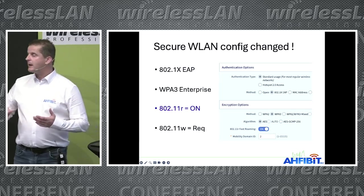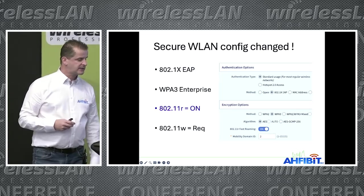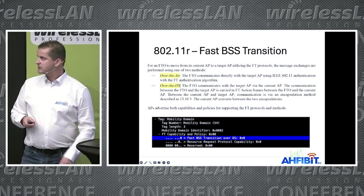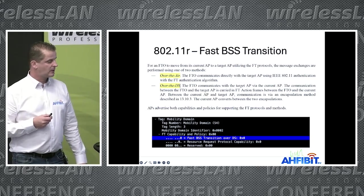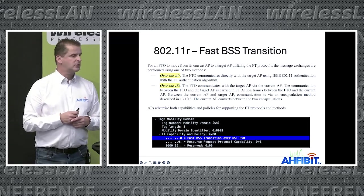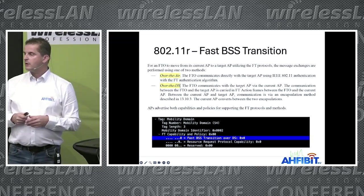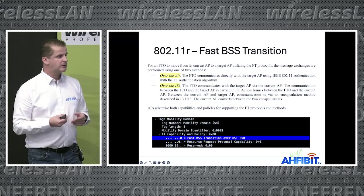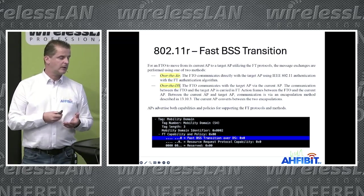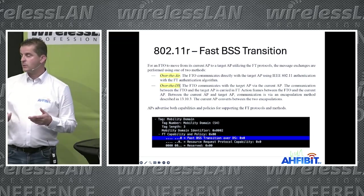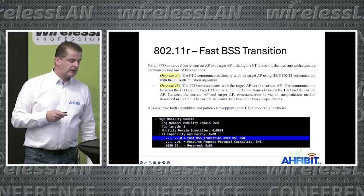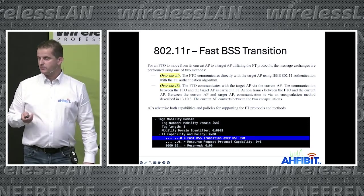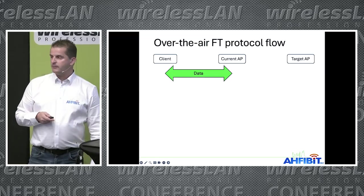I was hoping 11r would get me to five or ten milliseconds. Looking at the 802.11-2020 standard, there are two options: 11r over-the-air and 11r over-the-DS. Over-the-air is the default, where the client communicates with the target AP over the air. You can see it in the beacons — the AP announces it can do over-the-air because the over-the-DS bit is set to zero.